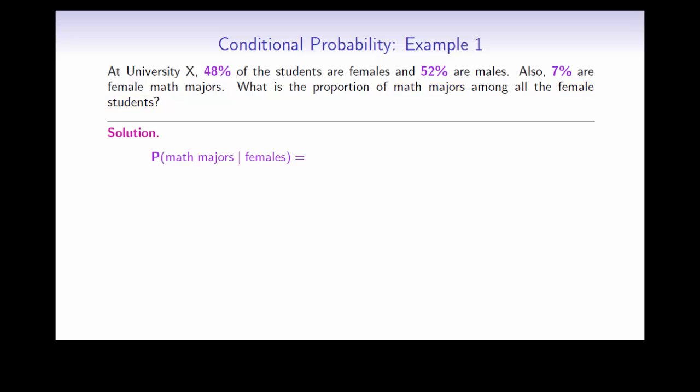This means that we need to find the conditional probability of math majors given that they're females. So we need to use the formula that we just discussed. The probability that a person is both female and a math major is 7%. The probability that it's a female is 48%. So multiplying both top and bottom by 100, we get 7 divided by 48.